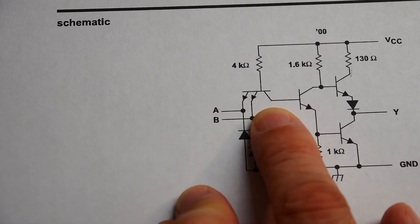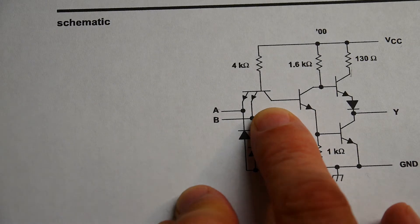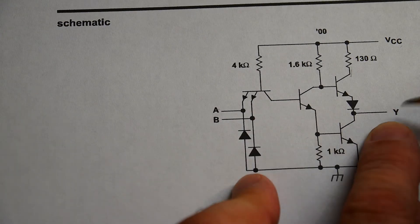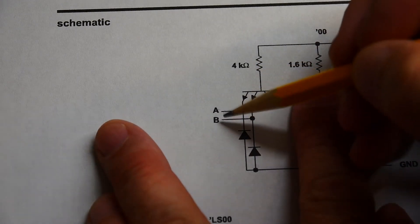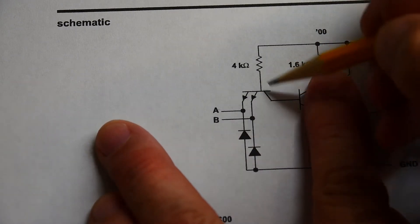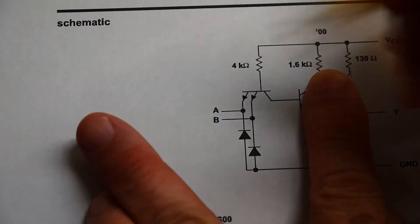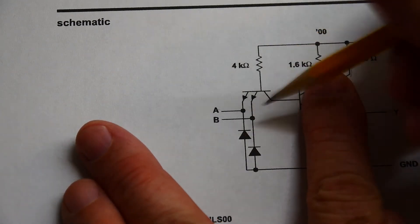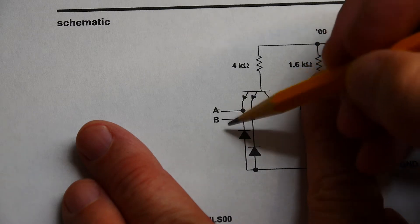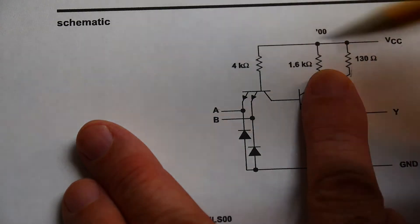If either one of them is low, it'll turn this on. Remember this is a NAND gate. So both inputs have to be high for it to output a low on the output. So which means these both have to be high, which means that this transistor will finally be off. Either one of these emitters can cause this transistor to turn on. So they both have to be high on the input so that this transistor is turned off.